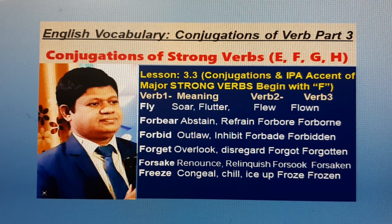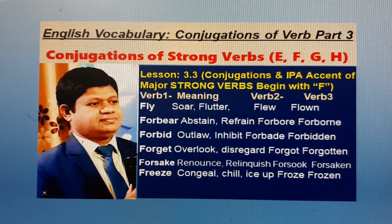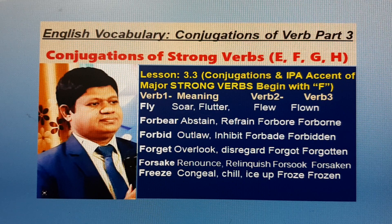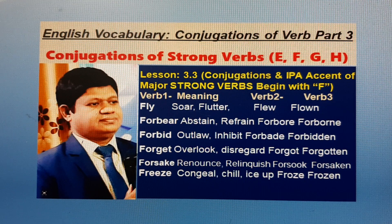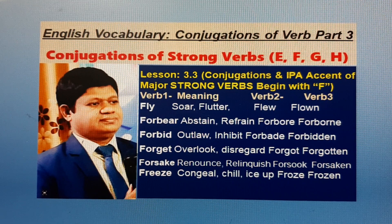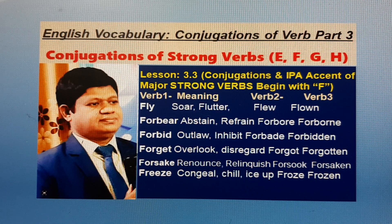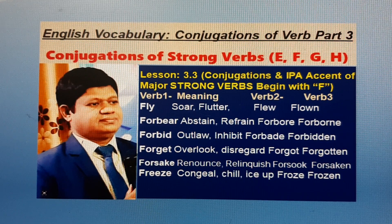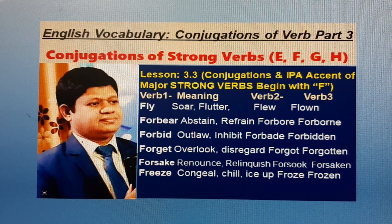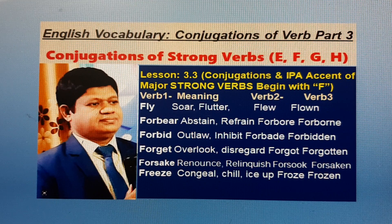Fly: B1 base form, meaning — to soar, take off, Ura. B2: flew. B3: flown. Forbear: B1, meaning — abstain, refrain, Shudyukora. B2: forbore. B3: forborne. Forbid: base form, meaning — outlaw, inhibit, Nishetkara. First form: forbade. Past participle: forbidden.